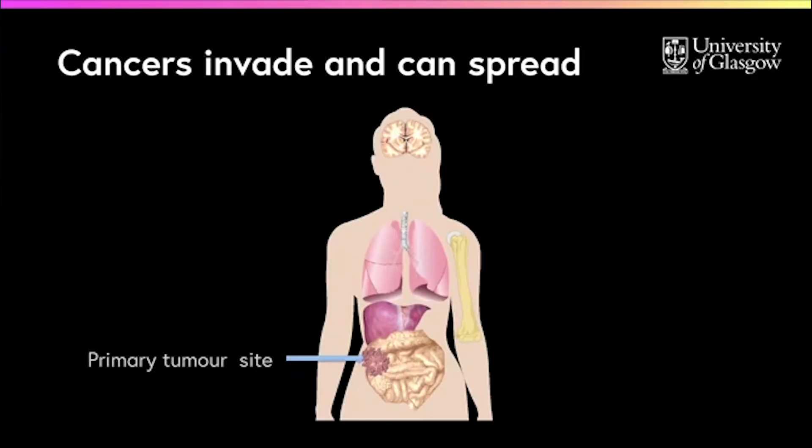Once they have invaded, malignant tumours can spread to different sites where they can grow and form more tumour masses. Where the cancer started is called the primary site or site of origin.